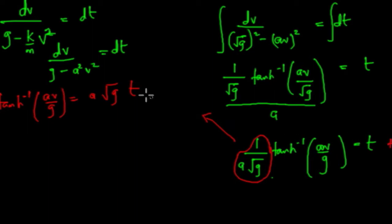So what we have is going to be hyperbolic tangent of av all over g equals a root g times t. Plus, we should always not forget this arbitrary constant. Plus c, and this is going to be multiplied by a root g. And we're going to get a new constant there.